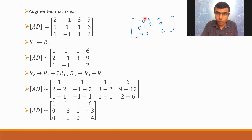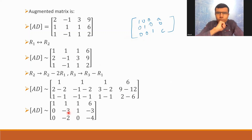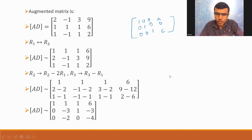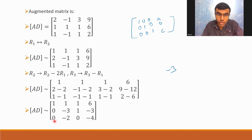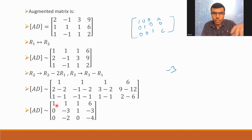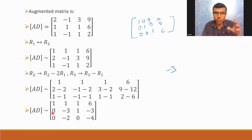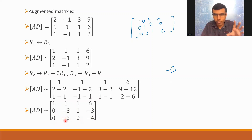My next objective is to get 0, 1, 0 in the second column. In the second column I have 1 in the middle, but in the third row I have minus 3. How to make it 1? I need to use only the third row — I should not use the first row while doing this, because if I use the first row again, the zero I got in the first column will be lost. So I need to use only the third row.